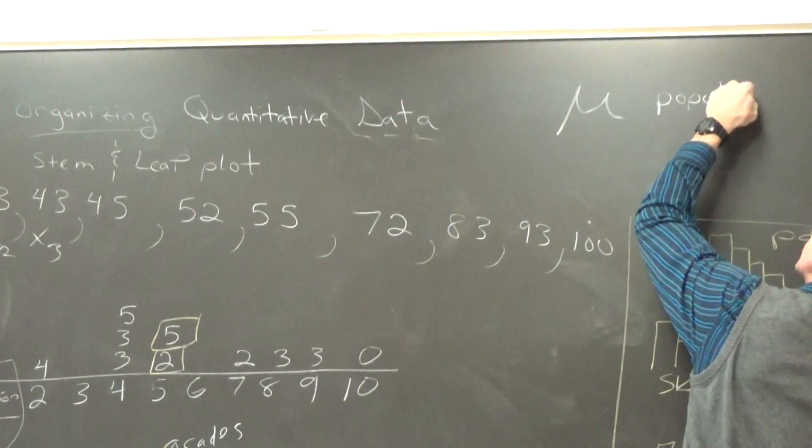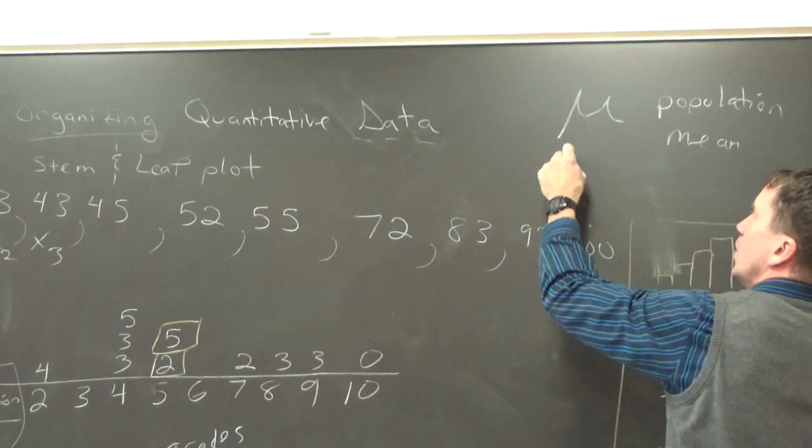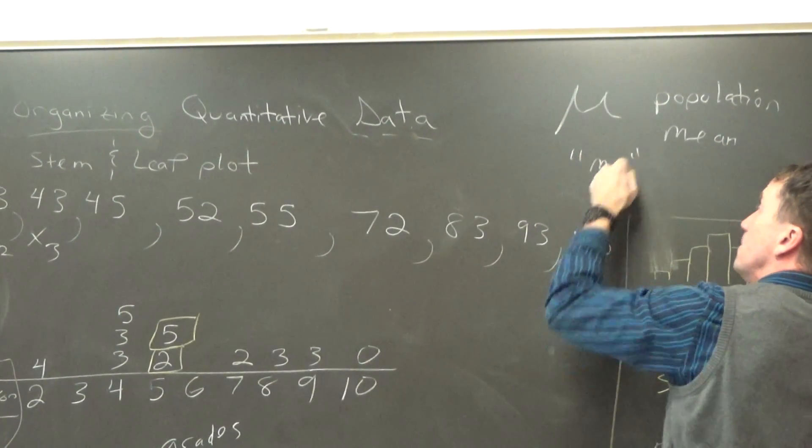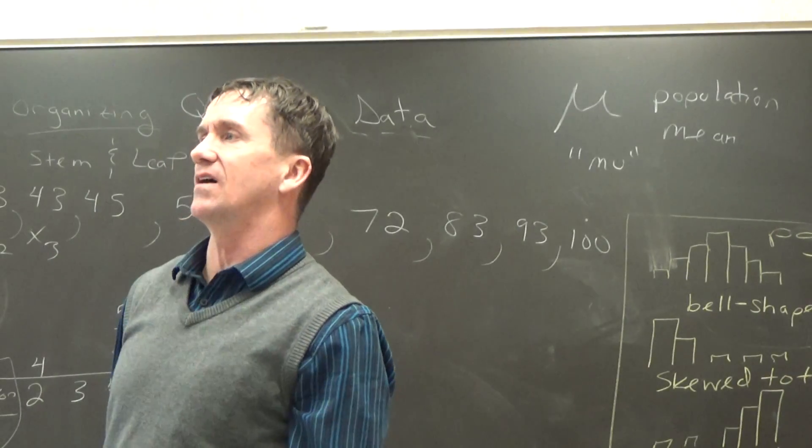You know, populations can be in the millions, right? Well, the symbol is the Greek letter mu, it's pronounced mu, okay? Just so you can get used to that, I just put that off to the side.